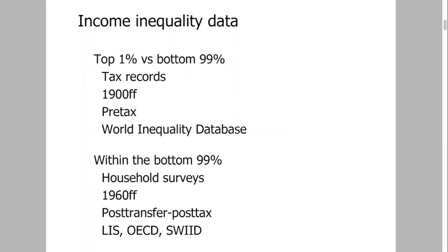Income inequality data come in two forms these days. One has to do with inequality between those at the very top and everyone else. These are fairly new data, a function of the last 15 years or so. The data come from tax records, available for a couple of countries prior to the 1900s, but for most countries going back to the early 1900s — essentially whenever a country instituted a national income tax. The data are almost always pre-tax, largely from the World Inequality Database compiled by Thomas Piketty and his collaborators.